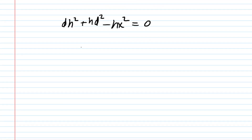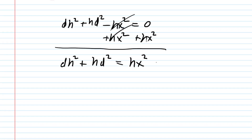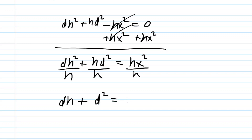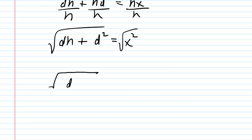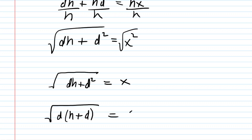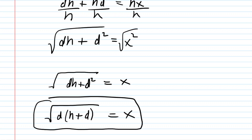Our goal is to solve for X. Adding HX² to both sides and then dividing every term by H gives DH + D² = X². Taking the square root of both sides, X equals the square root of DH + D², which can be factored as the square root of D times (H + D). This is the value of X that maximizes the viewing angle theta.